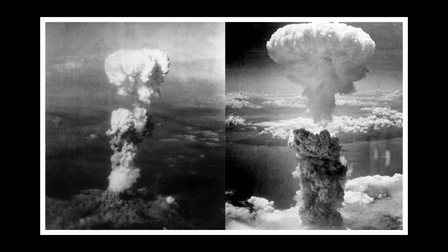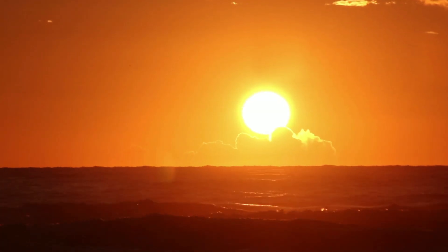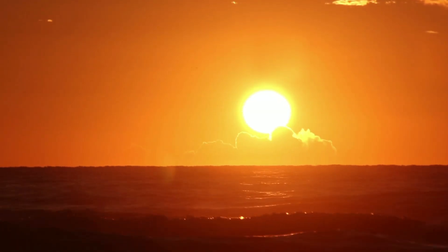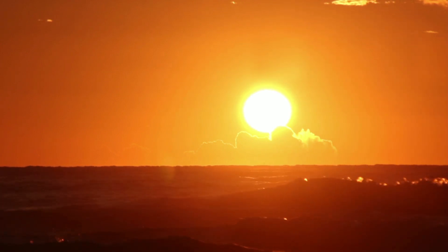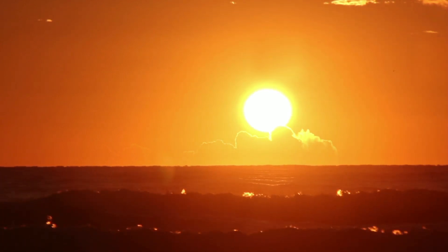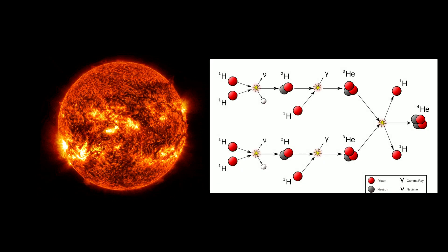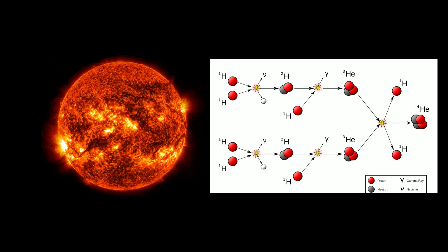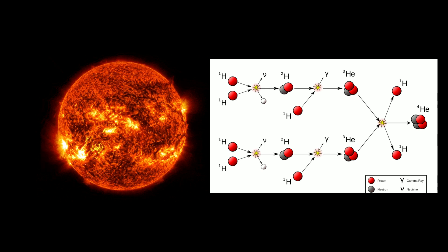Because c represents the speed of light, which is very high, a very small amount of mass can be converted to very large amounts of energy. We saw proof of this in the Hiroshima and Nagasaki atomic explosions in 1945. This equation lies at the heart of energy creation in our sun — the sun provides us energy because of thermonuclear reactions at its core, which effectively convert a small amount of mass to pure energy that is radiated outwards.